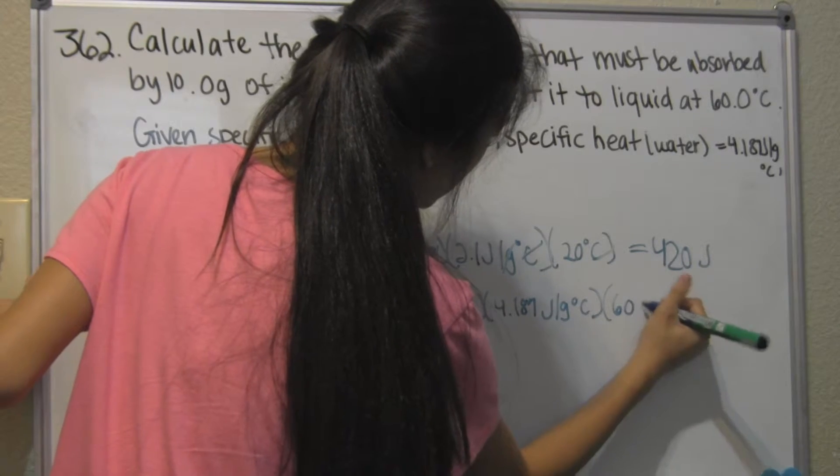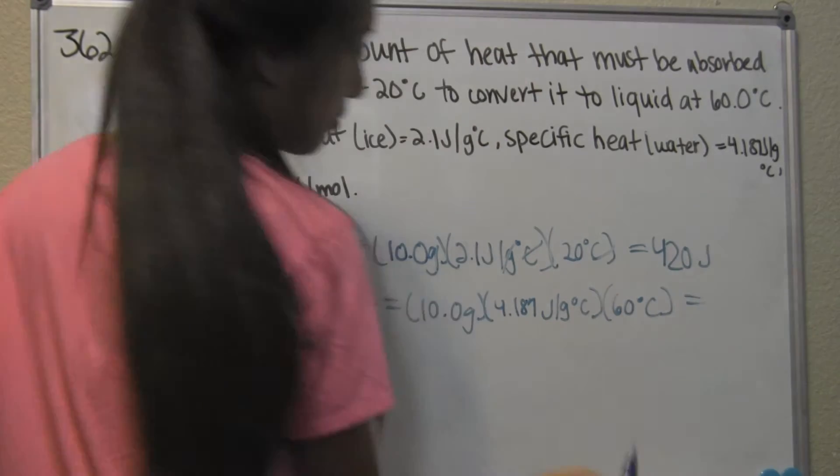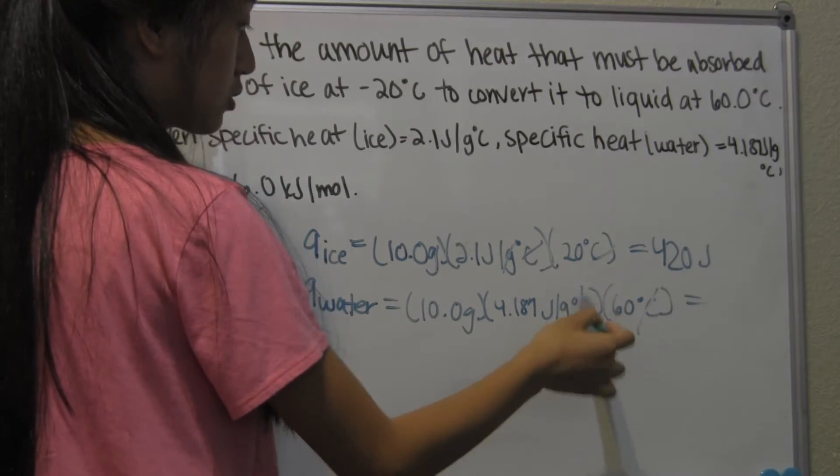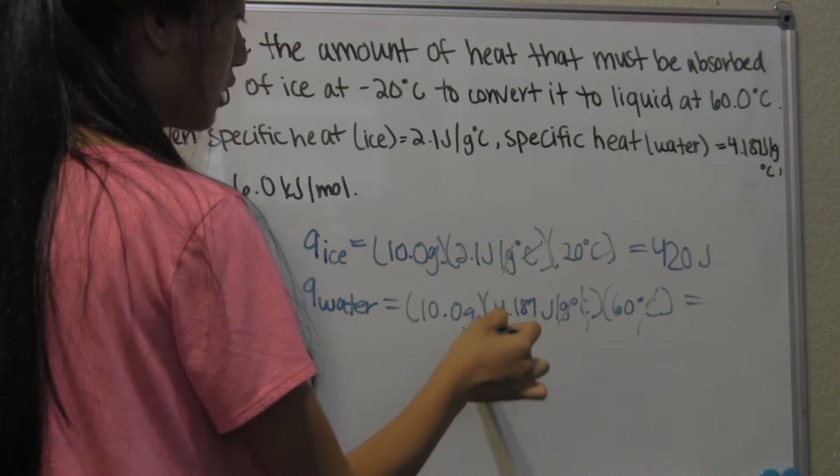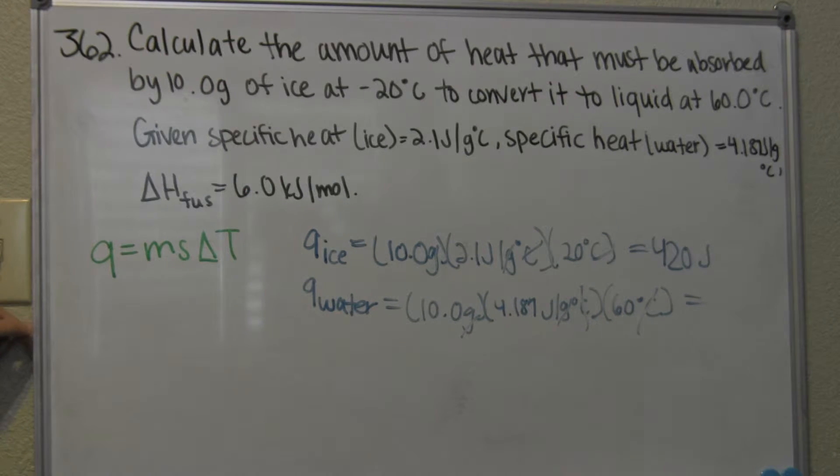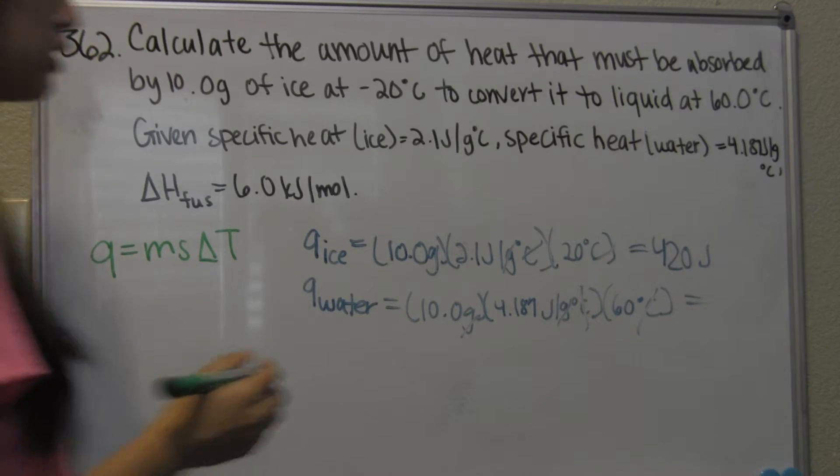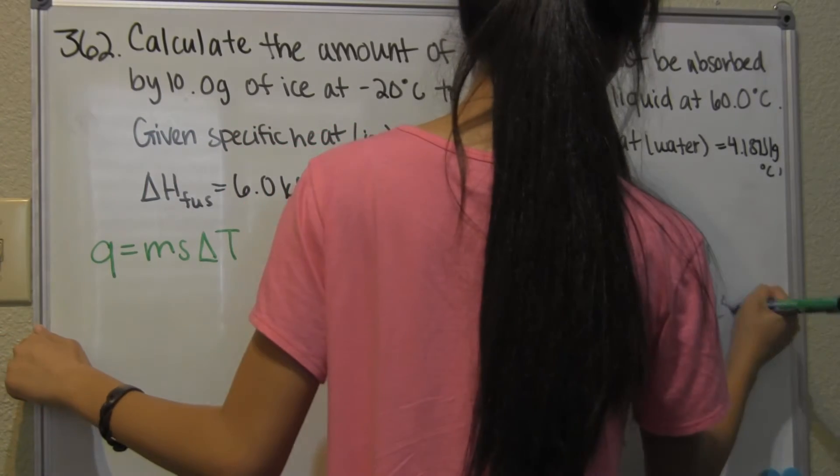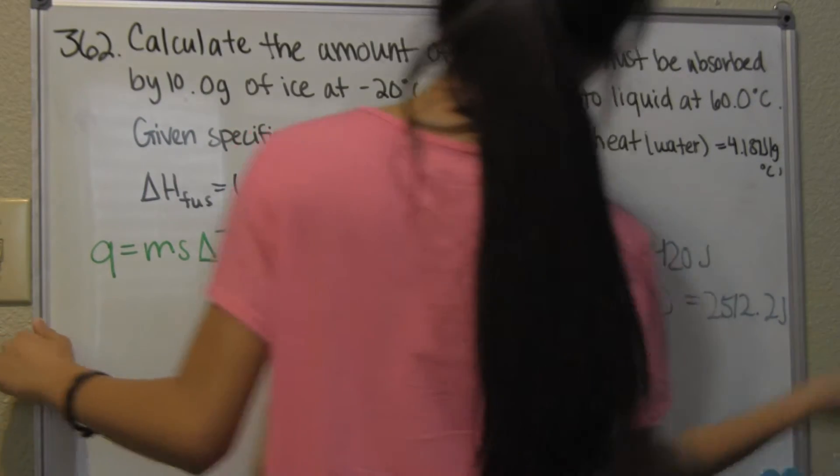Celsius cancels with Celsius, grams cancels with grams, and then you're going to be left with 2,512.2 joules.